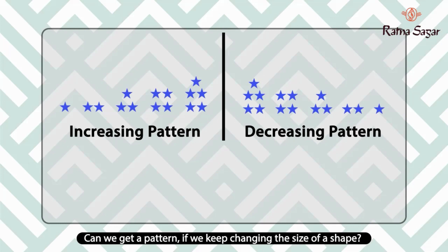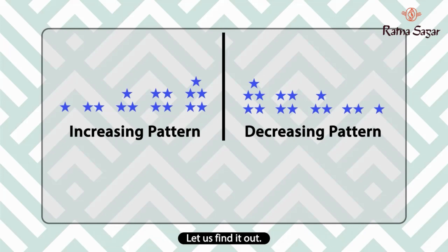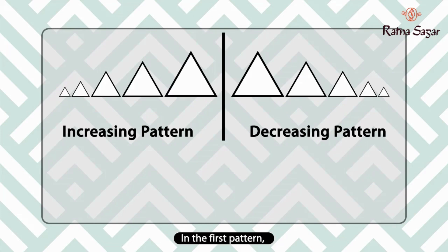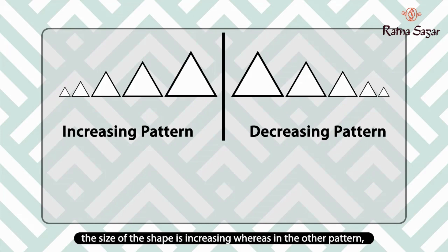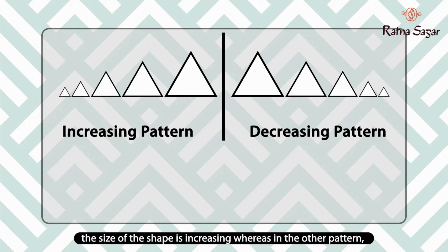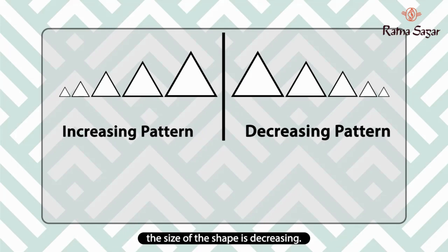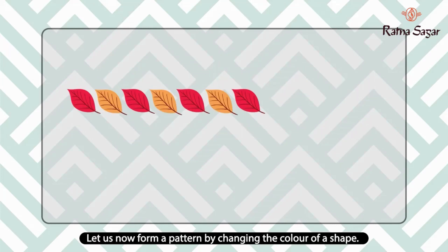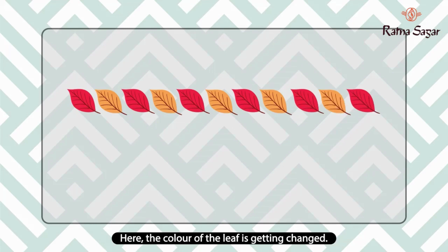Can we get a pattern if we keep changing the size of a shape? Let us find out. Look at these two patterns — in the first pattern the size of the shape is increasing, whereas in the other pattern the size of the shape is decreasing.